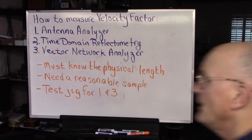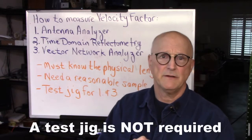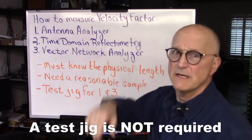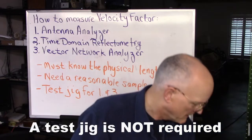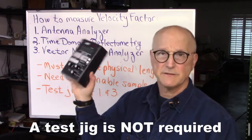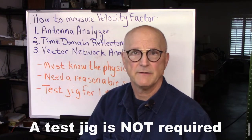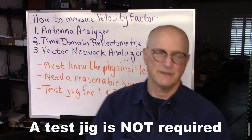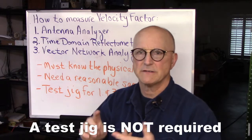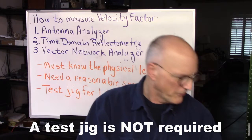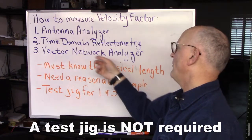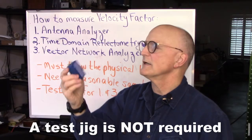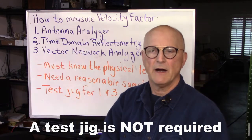How on earth do I do that? Well, there are three ways. The first one is using your antenna analyzer — using a standard everyday antenna analyzer such as this one, you can measure or determine what the velocity factor of your coax or transmission line is. The second is time domain reflectometry — don't let that scare you, it's not that complicated; you need a signal generator and an oscilloscope. The third one, don't let this one scare you either, is a vector network analyzer, such as this little mini VNA tiny, which is what we will be using for our experiment.